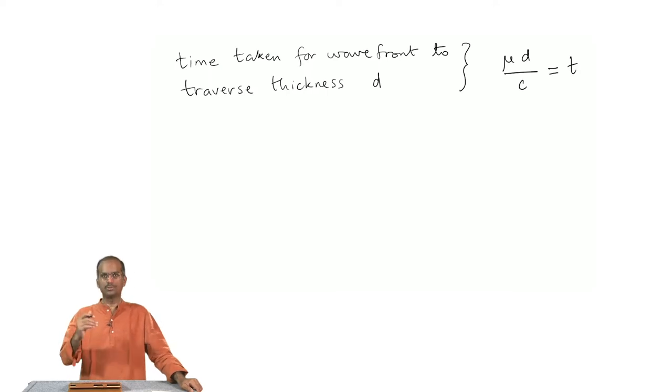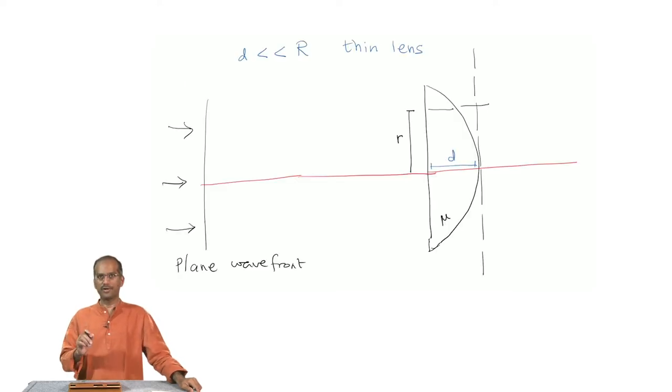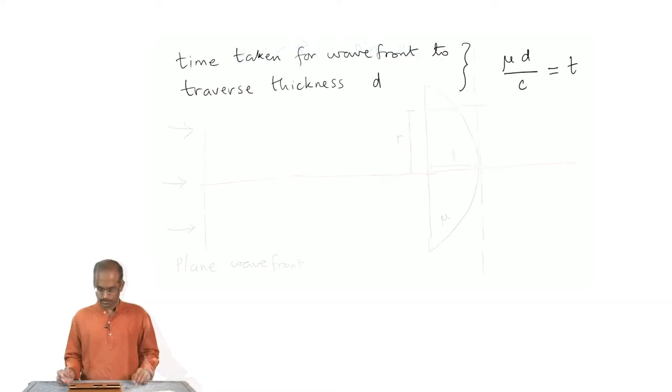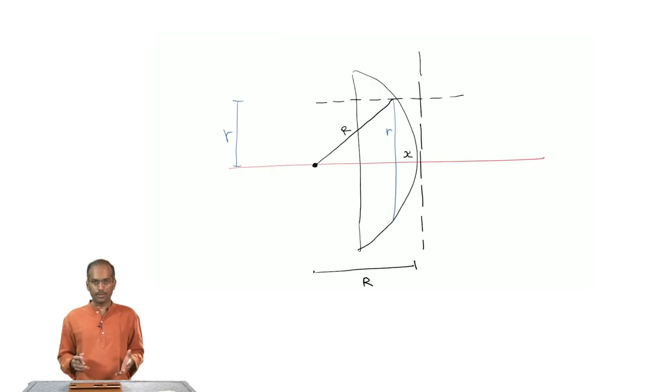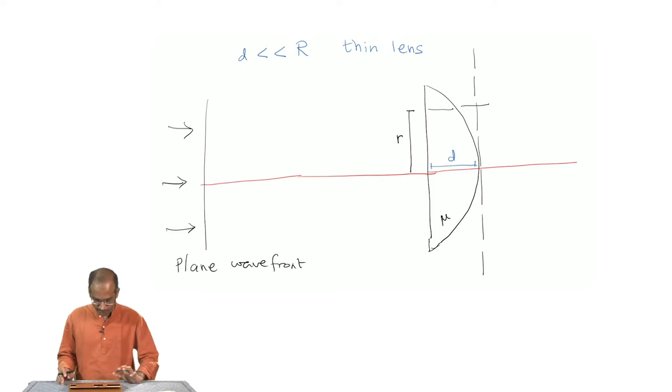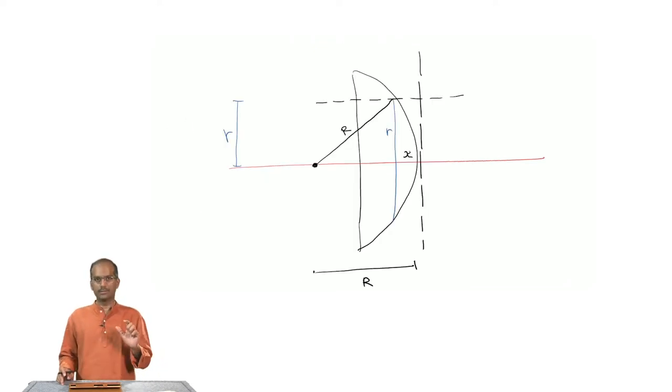Now, what happens to the wave front that hits the lens at a distance r from this axis? What we want to know is how much distance does the wave front travel in the same time t. You can take a look at this diagram, it is nearly the same diagram that I have here, but I have tried to focus on this particular ray which comes and hits the lens at a distance r from the optic axis.